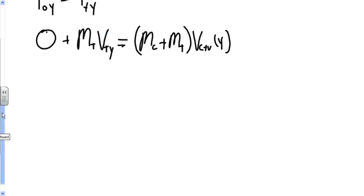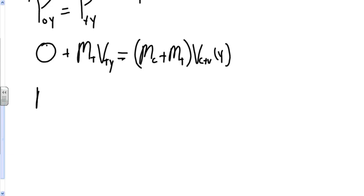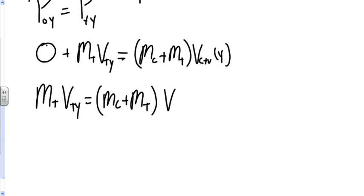Going through and plugging in numbers, I have mass of the truck times velocity of the truck in the y direction equals mass of the car plus mass of the truck. Instead of velocity of the car plus truck in the y direction, I'm going to write it in terms of the velocity we were given: velocity of the car plus truck times sine of 40 degrees. That will give us the y component of velocity.